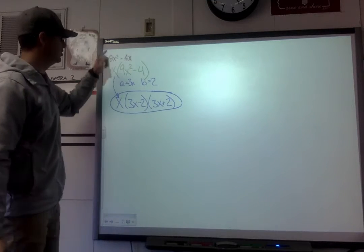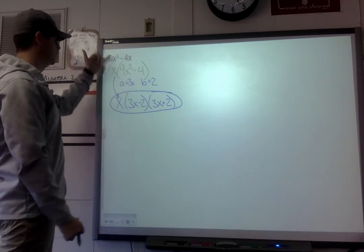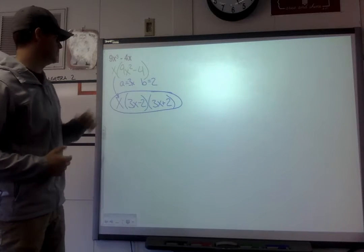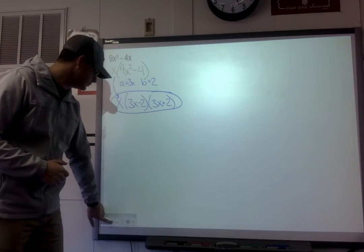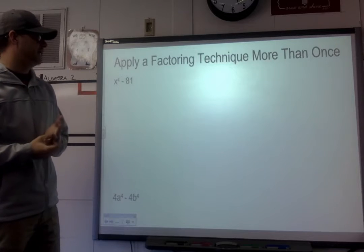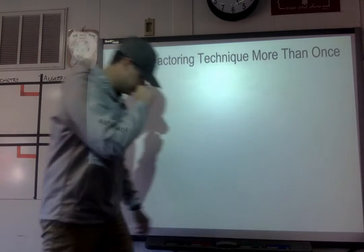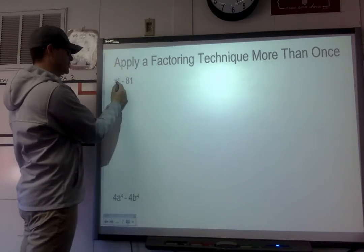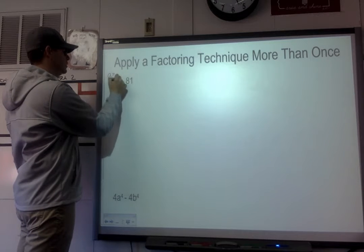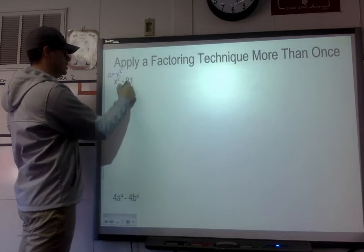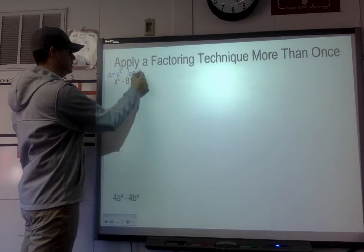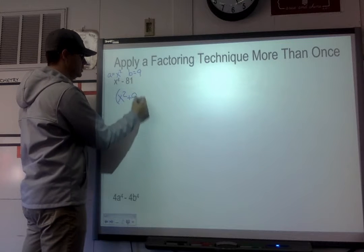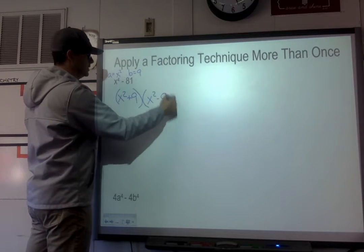Sometimes it might not look like a perfect square right off the bat, but if you work through it, you can still use the difference of two squares rule. Now, applying a factoring technique more than once: look at x⁴ - 81. x⁴ is a perfect square — the square root is x². The square root of 81 is 9. So this factors into (x² + 9)(x² - 9).